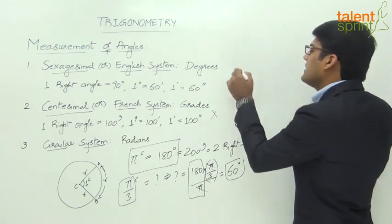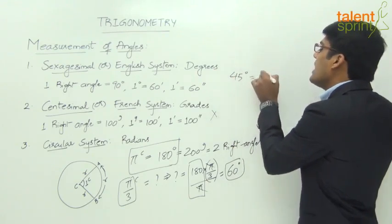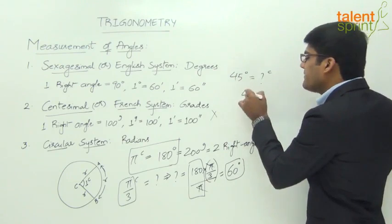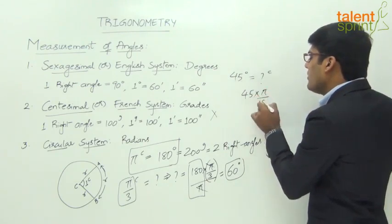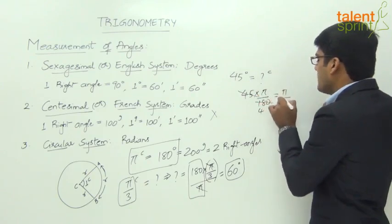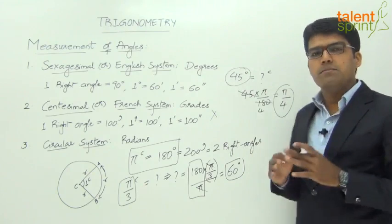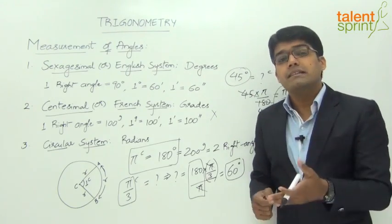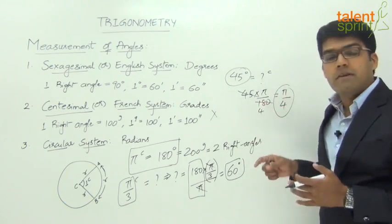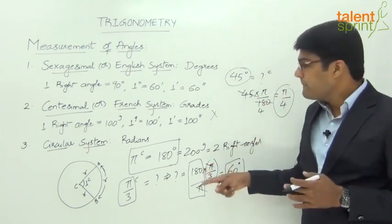For example, π/3 radians equals how many degrees? Since π radians is 180 degrees, π/3 radians equals 180 × (1/3) = 60 degrees. Conversely, 45 degrees equals how many radians? Multiply by π/180: 45 × π/180 = π/4 radians. So 45 degrees equals π/4 radians.